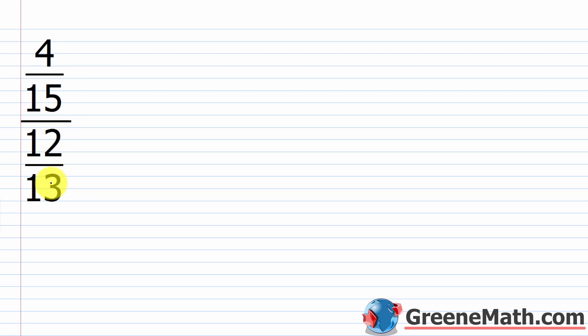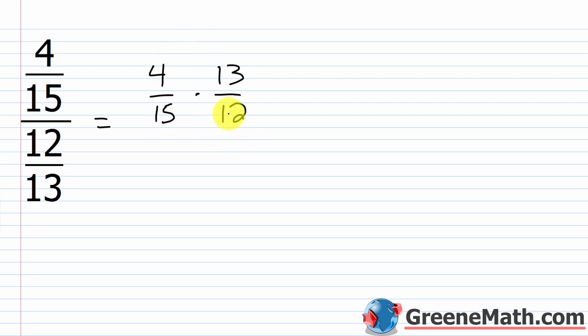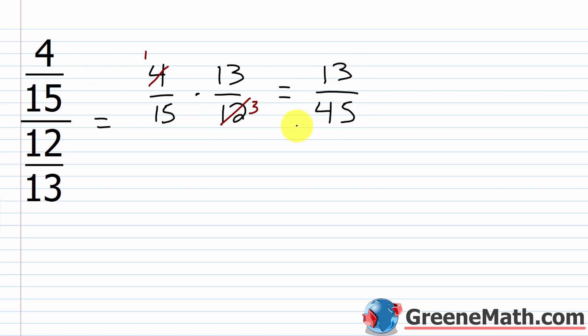For the second problem, we have a simpler one — basically just a division problem: 4/15 over 12/13. This is 4/15 times the reciprocal of what we're dividing by, so times 13/12. Now I can cross-cancel: the greatest common divisor between 4 and 12 is 4, so 4 divided by 4 is 1, and 12 divided by 4 is 3. Nothing to cancel between 13 and 15. So we multiply: 1 times 13 is 13, over 15 times 3, that's 45. This simplifies to 13/45.